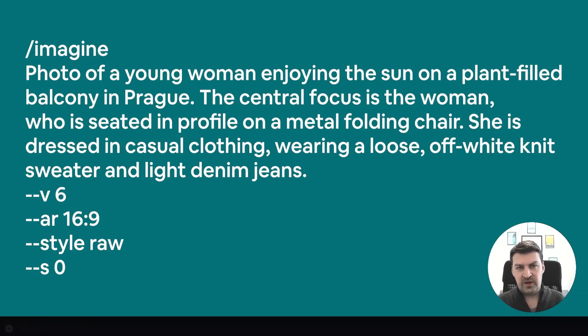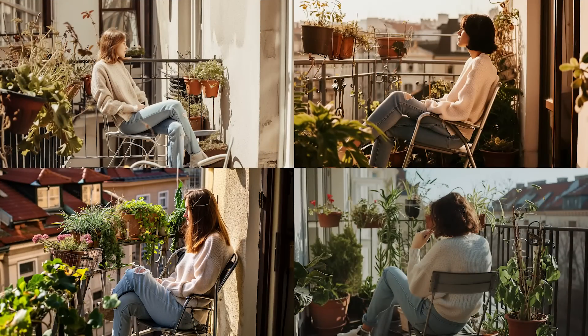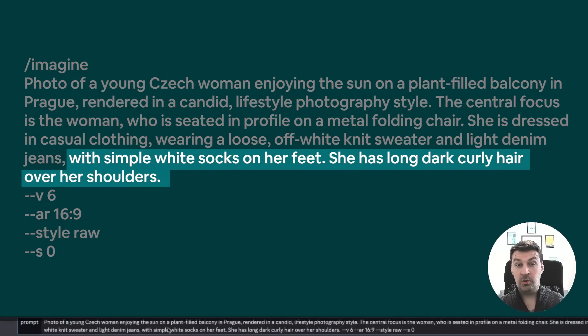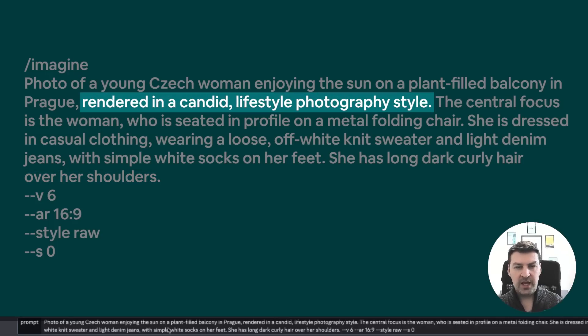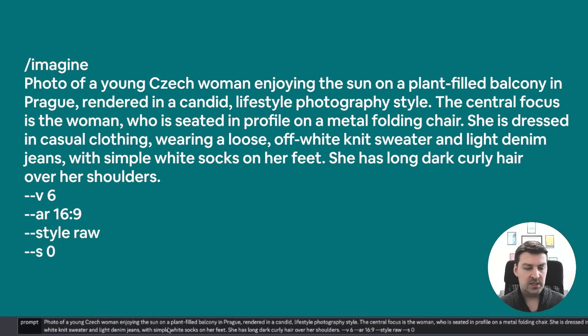So we're going to specify that we want her to be the central focus, and also say a little bit about her clothing as well as where she's seated. These are already much, much better — the woman is clearly much more in focus of the camera, we've zoomed in, and she's wearing the right clothes. The sweater is exactly what we were looking for, but there are still a couple of things that don't quite fit. She doesn't necessarily look like the lady in the reference image, the overall style isn't quite what I want, and we're also missing her socks. So we're going to add in white socks, specify her hairstyle, add 'rendered in a candid lifestyle photography style,' and change her ethnicity to Czech woman since we said we're in Prague.